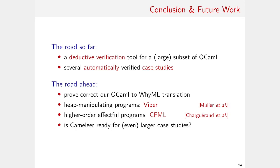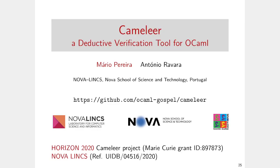In the future, we would like to produce a proof of correctness from OCaml into WhyML showing semantic preservation, and augment the class of OCaml programs we can verify. As a first step, for simpler heap-manipulating programs, we will feature a translation into the Viper intermediate verification language, and for higher-order effectful programs, a translation into the CFML tool. The big question is: is Camelier ready for even larger case studies? We believe so, and we have a number of projects running with very promising results. Thank you very much for your attention, and thanks to Horizon 2020 and our links for financial support.